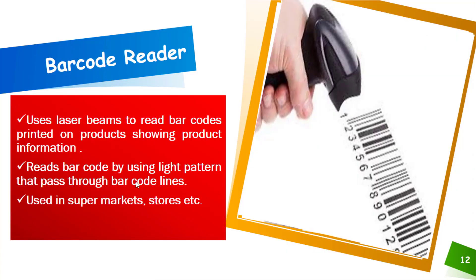Next we have barcode readers. A barcode reader uses laser beams to read barcodes printed on products, showing product information such as product name, manufacturing company, expiry date, and so on. Through a barcode, you can get all information about the product. The barcode reader uses a light pattern passing through the barcode lines to read it. These are widely used in supermarkets, stores, pharmaceutical stores, and libraries.